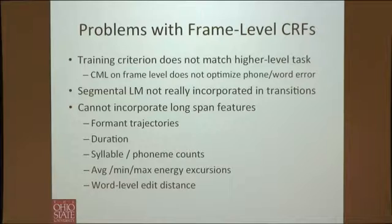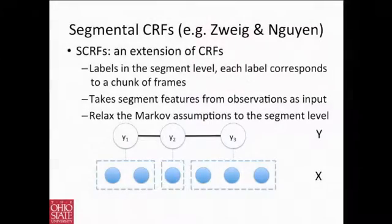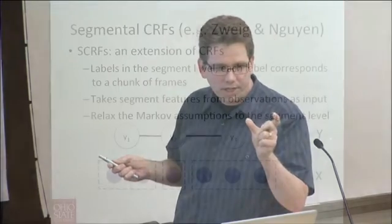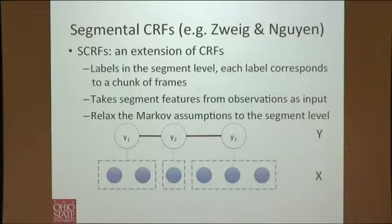We want to incorporate long-span features like duration — which is very distinctive especially in non-English languages — formant trajectories, syllable and phoneme counts. So: segmental CRFs to the rescue. The idea is to change labels from frame-level Q to segment-level Y, where each label corresponds to some chunk of frames. Phonotactic grammars now actually fit — we're talking about this phone changing to that phone.